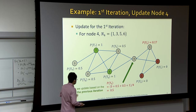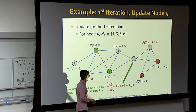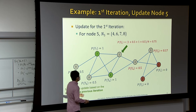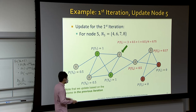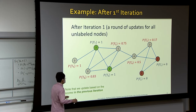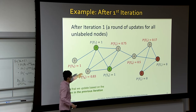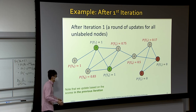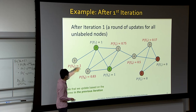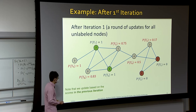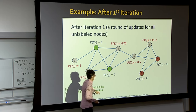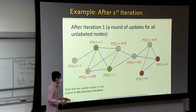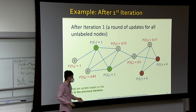Continuing the running example: using the same idea, we compute all unlabeled nodes. Node 5 has likelihood 0.75. After this first iteration, nodes 8 and 9 have high predictive values because they're close to labeled nodes, while node 3 has a low prediction score. Just after one iteration, the algorithm already makes reasonable guesses about labels in the network.